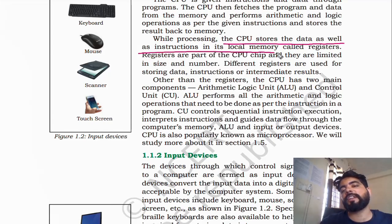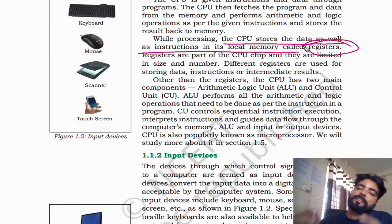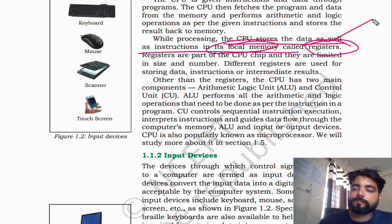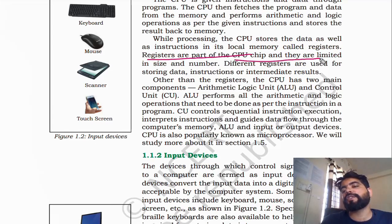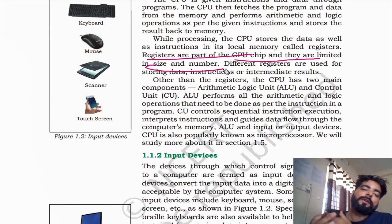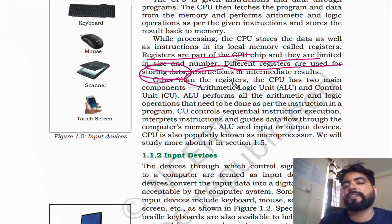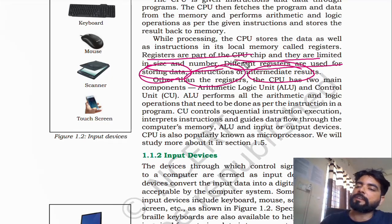While processing, the CPU stores data as well as instructions in its local memory called registers. Registers are part of the CPU chip and are limited in size and number — they are very costly and fast memory. Different registers are used for storing data, instructions, and intermediate results.